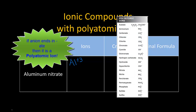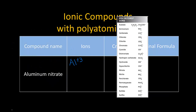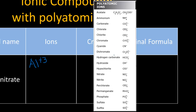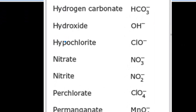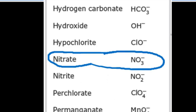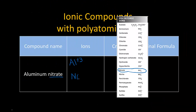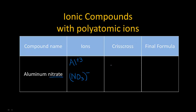Polyatomic ions means more than one atom, and all of these ions have a charge, meaning they have lost or gained electrons. We're going to look for nitrate — it is NO₃⁻. It has one nitrogen, three oxygens, and the entire group has a minus one charge. Now we're going to do what we always do in ionic compounds: crisscross the charges.